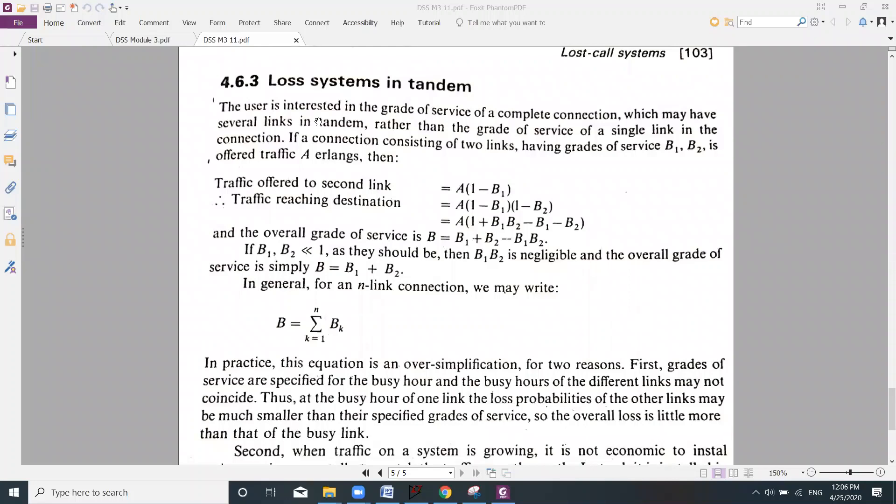The user is interested in the grade of service of a complete connection which may have several links in tandem, rather than the grade of service for a single link in the connection. If the user has to know the grade of service, he will get the whole system grade of service, not for the single trunk.